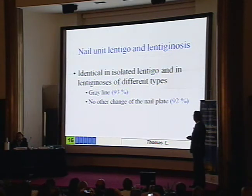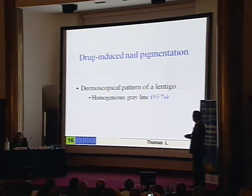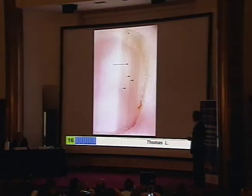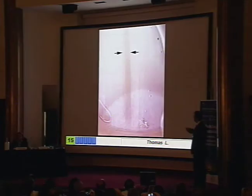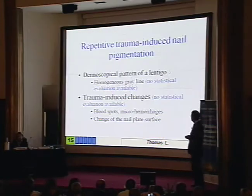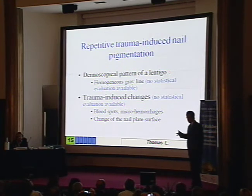Lentigo and lentiginosis show gray lines. But this is also the case for drug-induced pigmentation and ethnic-type pigmentation — it's always grayish longitudinal lines, without brown coloration and without irregularity in the lines.